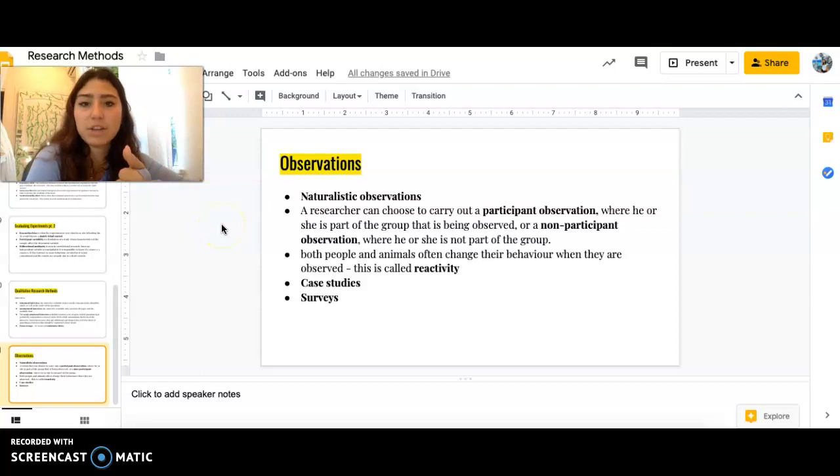Observations. There's naturalistic observation. And then there is a researcher can choose to carry a participant observation where he or she is part of the group being observed. Or non-participant observation where he or she is not part of the group. And then both people can often change their behavior due to reactivity. And then, obviously, there's case studies and surveys, which are other forms of qualitative research.